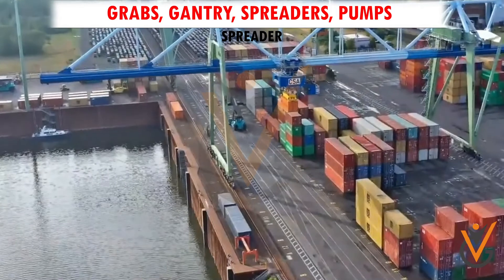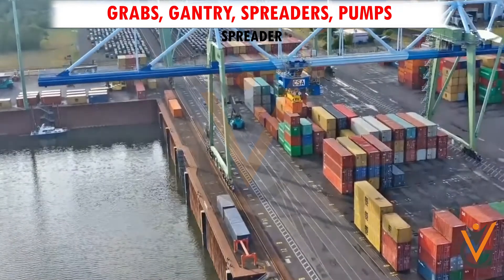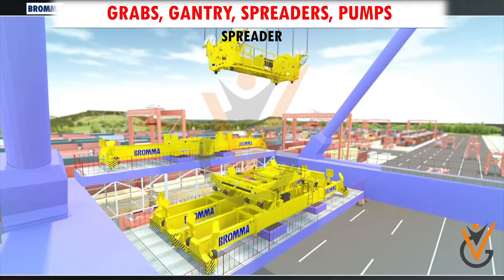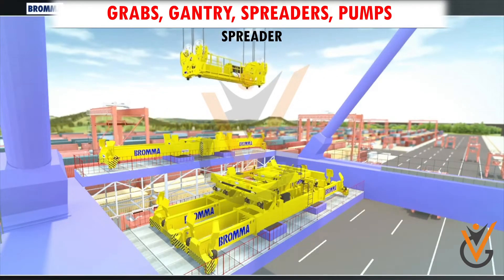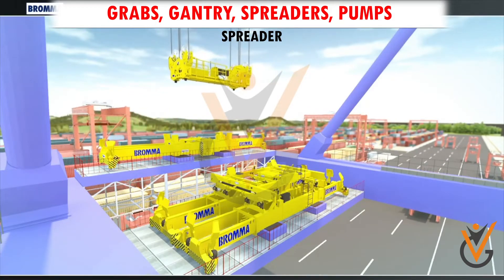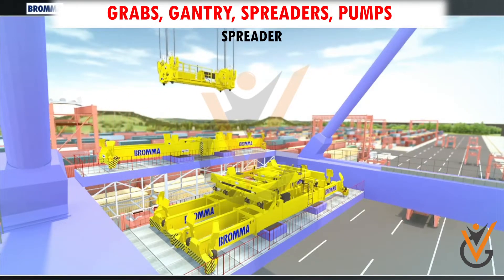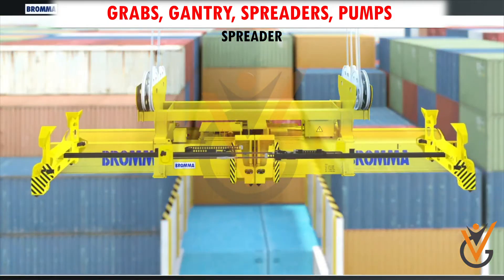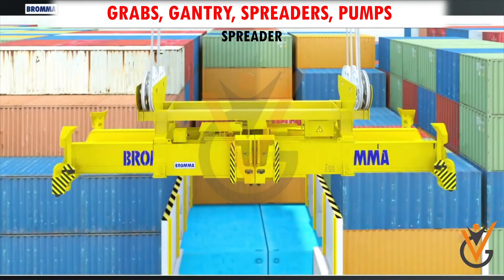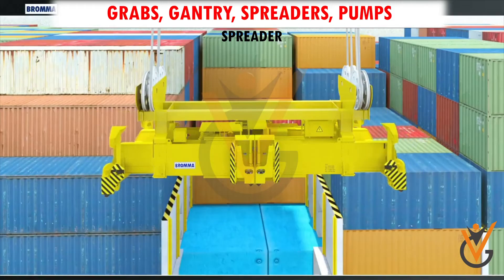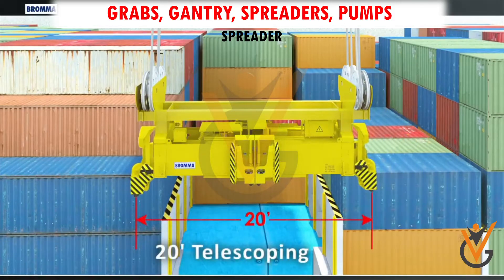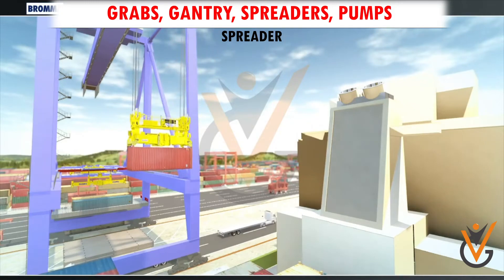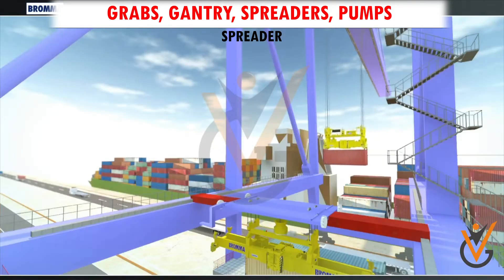A spreader is attached with the operator's cabin on the rail structure and on the boom, so that it can also move transversely on the boom for lifting cargo. The spreader itself can open and close depending upon the size and number of containers to be lifted. The modern built spreader can lift up to four containers together.